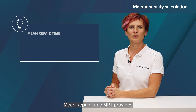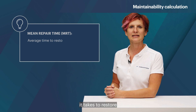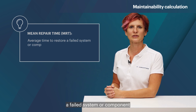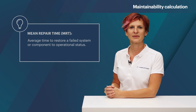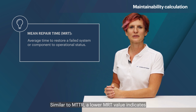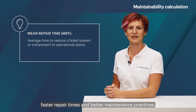Mean Repair Time, MRT, provides insights into the average time it takes to restore a failed system or component to operational status after a failure happens. Similar to MTTR, a lower MRT value indicates faster repair times and better maintenance practices.